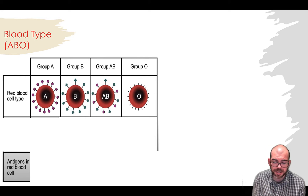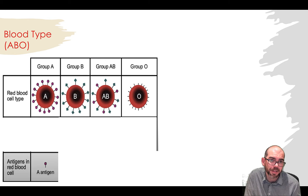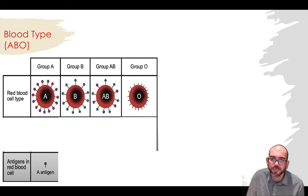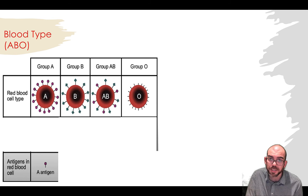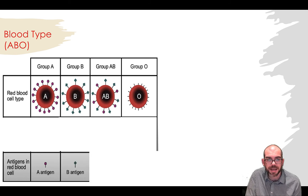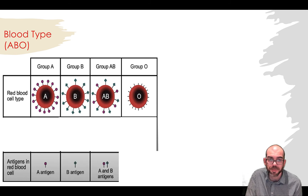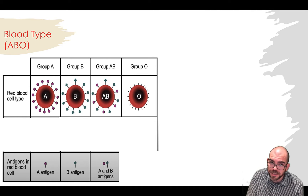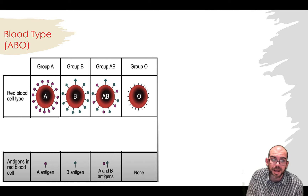Let's see the genetics behind that. If I am type A, that means on the outside surface of my red blood cells, I have an A antigen. Type B works the same way — you have type B antigens. For AB, you have both antigens, both expressed at the same time — co-dominant. And for type O, you have neither.